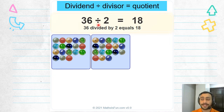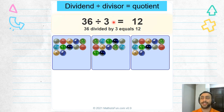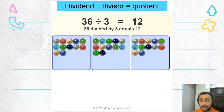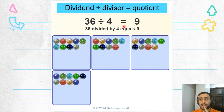Or a bigger example. What's the dividend here? The dividend is 36. What's the divisor here? It's two. What's the quotient here? It's 18. Look at this: 36 divided by three equals 12. Repeat after me: 36 divided by four equals nine. Very good.